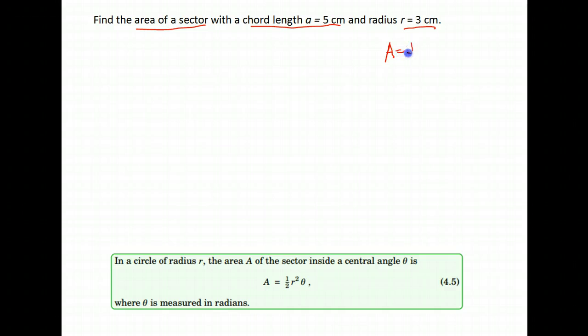Now remember to find the area of our sector, we need to do one-half radius squared. Our radius is 3, but then we need the angle theta to go right there, and we don't know theta at this point. So we're going to use our information to find theta, and then we'll be able to find the area of our sector.